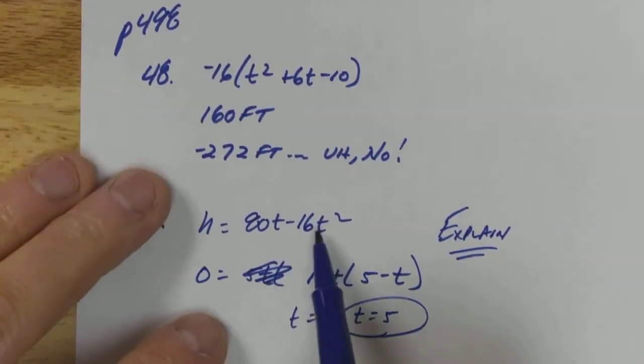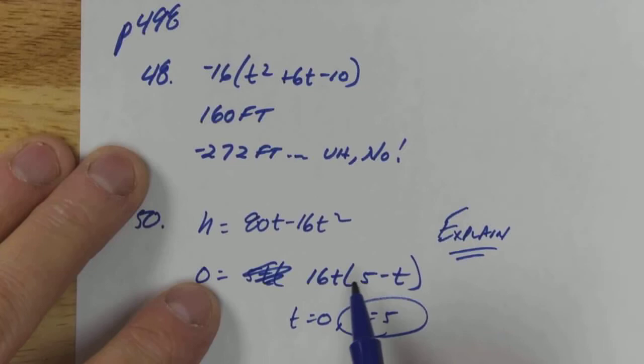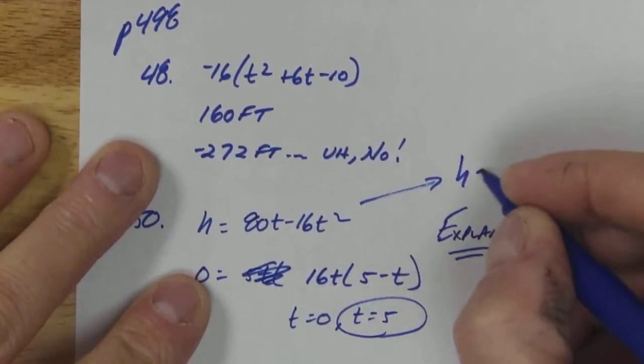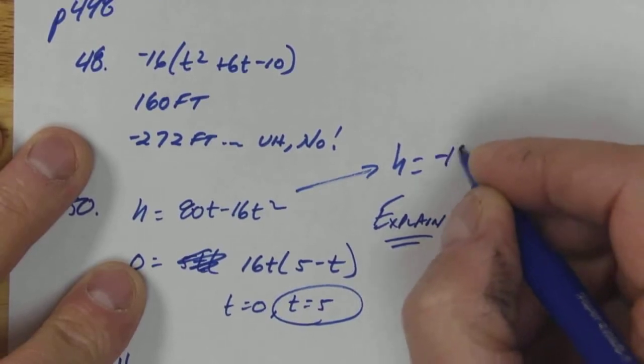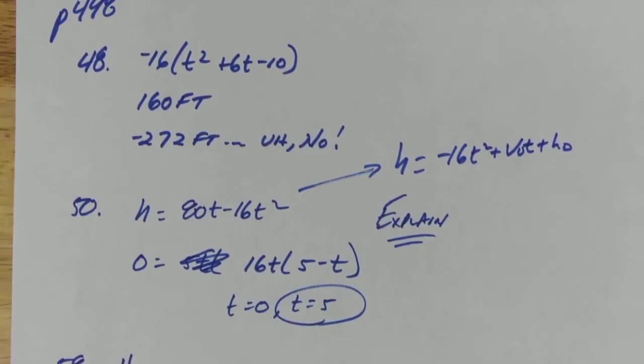So here's the equation they gave us. I'm going to factor out what I can. This is the height-time model we talked about yesterday: h equals negative 16t squared plus v sub zero t plus h sub zero.